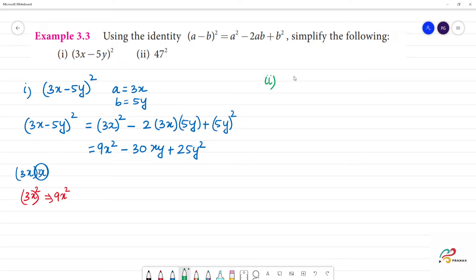Second one: 47². So this is how we write it: (50 - 3)².